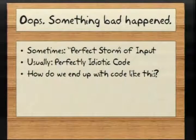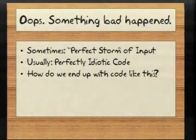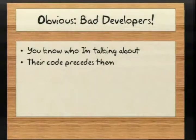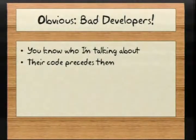So the next question is: how do we end up with bad code like this? Obvious — it's the bad developers. Those of you who are software developers or work with software developers probably know exactly who I'm talking about. A lot of times these developers have code named after them — the Dave code, the Jed code, the Brian code. That code lives long after they're gone and out wreaking havoc somewhere else, and you always hear the other developers just cursing: 'Damn Jed, damn Dave.'